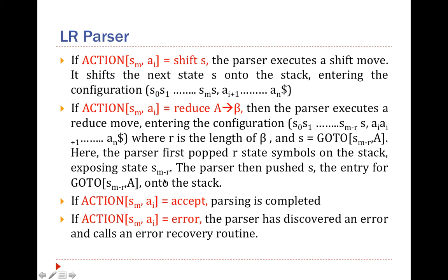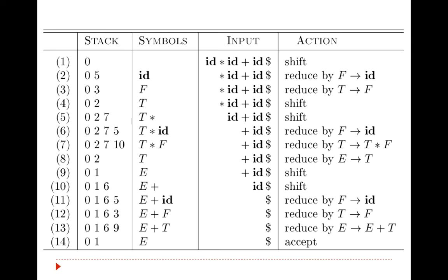I will be explaining these four with an example. While writing the parsing, we write down the stack, symbols, input, and action. The input string to be parsed is written here and it ends with the dollar sign. The stack always begins with the initial state. In this case, i0 corresponds to state 0 and becomes the initial state. So the parsing procedure begins with 0 at the top of the stack, with the input pointer pointing to the leftmost symbol, id.